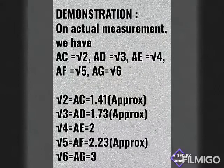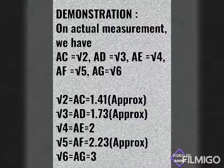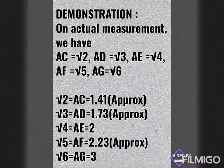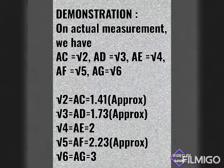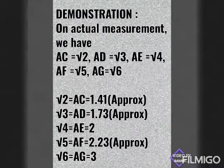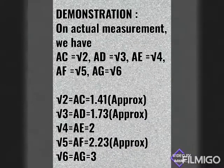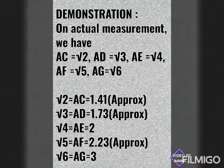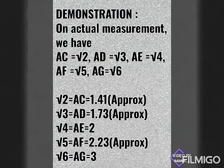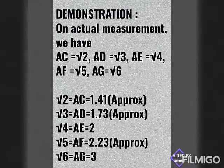Demonstration: On actual measurement we have AC equals root 2, AD equals root 3, AE equals root 4, AF equals root 5. Root 2 equals AC which equals 1.41 approximately. Root 3 equals AD which is 1.73 approximately. Root 4 equals 2, and root 5 equals 2.23 approximately.